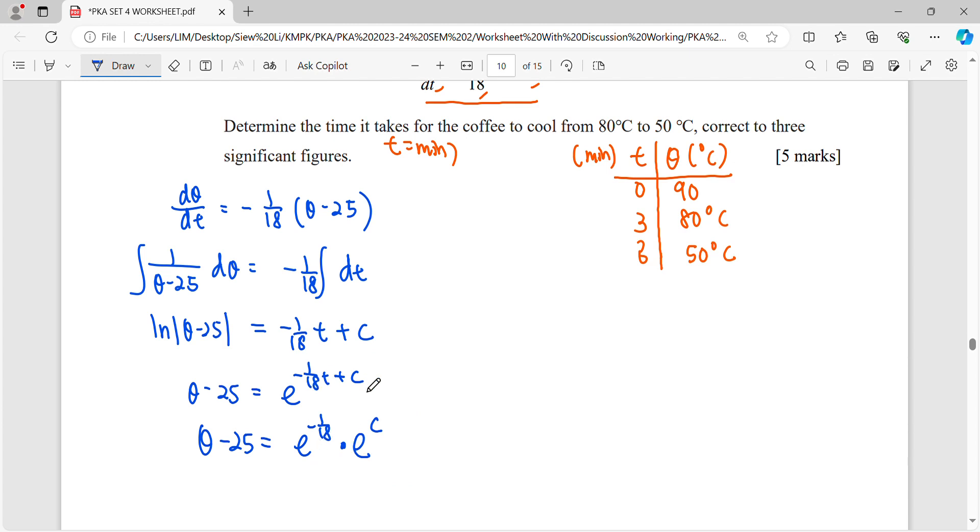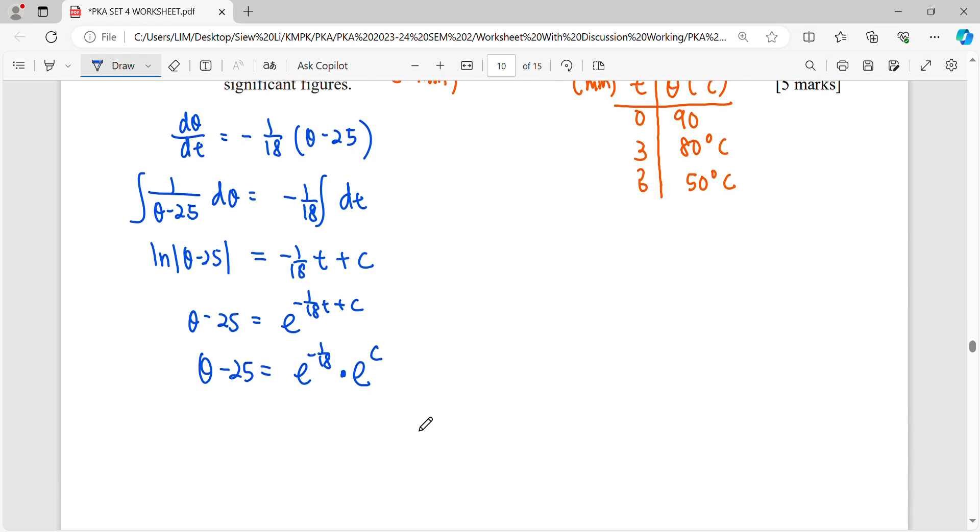So simplify the power of plus. It will be multiply with the same base of power c. So when you're having same base, same indices, multiply together, power can be added. So when you want to separate this power means e power 18 t, multiply e power c. So e power c is a constant. It will be A e negative 1 over 18 t. Then move back the 25 to the right-hand side. This is general solution.